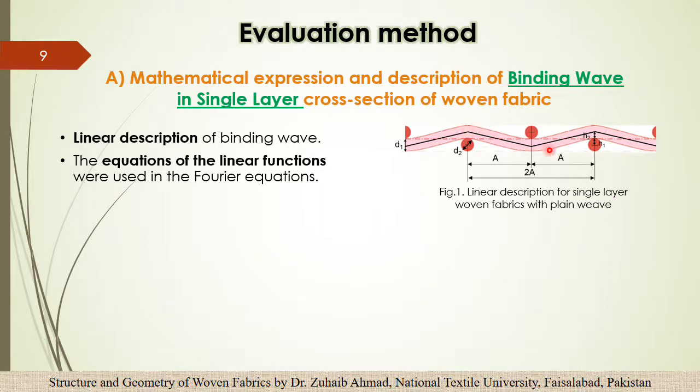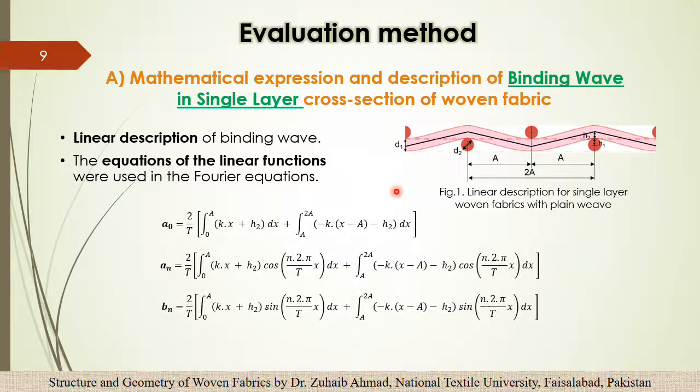Here in this single layer woven fabric, we can do the linear description of this binding wave by which we can use two straight lines. And we can use the equation of the lines to calculate its slope. As we have the height and diameters, and the distance between two yarns we already know, by using these parameters in the equations given below, we can do the approximation of this woven fabric.